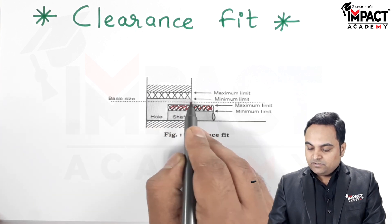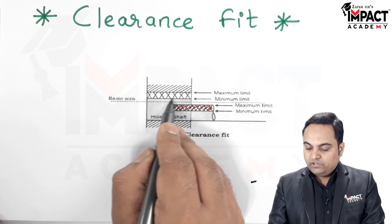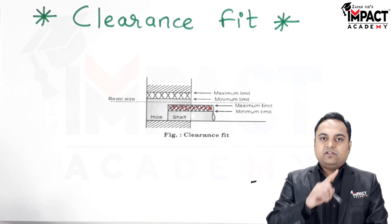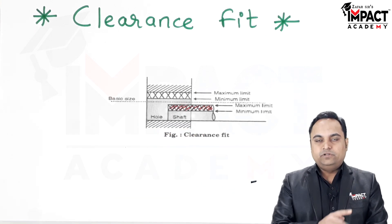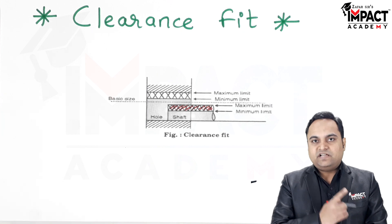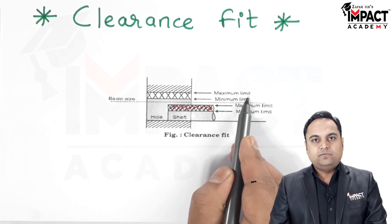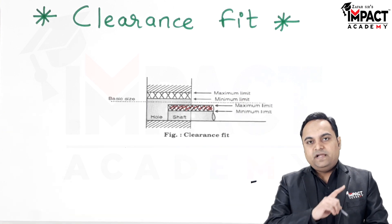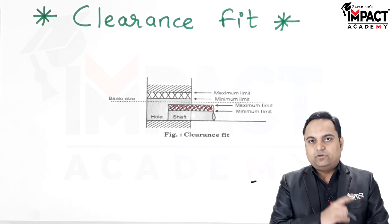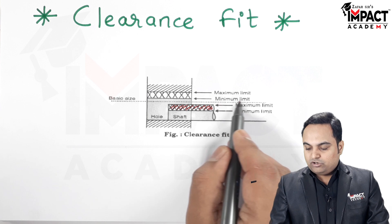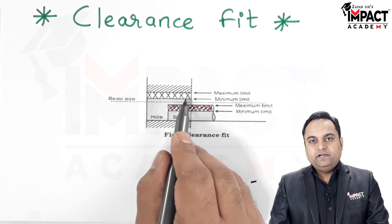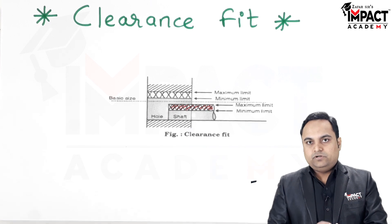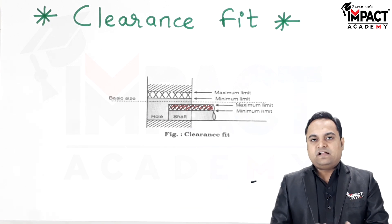Similarly, when we talk about the hole, the minimum limit of the hole is shown here. In the case of a hole, when we remove material — that is, increasing the hole size — that is called the maximum limit. So the maximum limit corresponds to the maximum material removal from the hole.